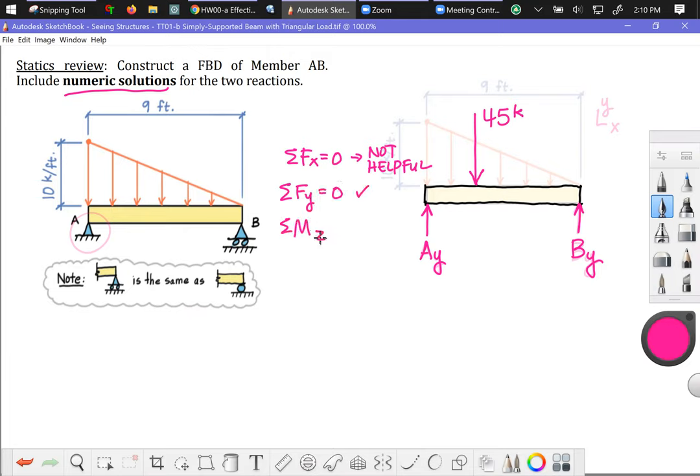Summation of forces in the y direction equals zero. That one is helpful. Summation of moments about any z axis equals zero. That one is helpful. My strategy is going to be doing this one first, because I know if I sum moments about the axis in the z direction coming out of your screen through point A, A sub Y doesn't enter the formulation because it's coincident to A. I can solve for B sub Y directly. So my strategy is to do this equation first, solve for my first unknown, and then I can use this equation to solve for my second unknown.